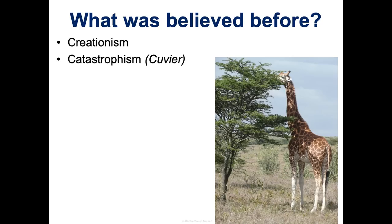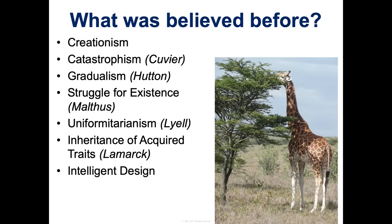I'm not going to go into huge detail on what was believed before — we're doing an activity in class on different theories. But I do want to emphasize the nature of science: as we acquire new information and more evidence, our understanding changes. Charles Darwin did not come up with evolution. All of these different people were trying to explain something they saw happening in nature — evolution has been talked about for hundreds of years. Darwin was just one of the first to come up with the accurate mechanism that we can see in action.